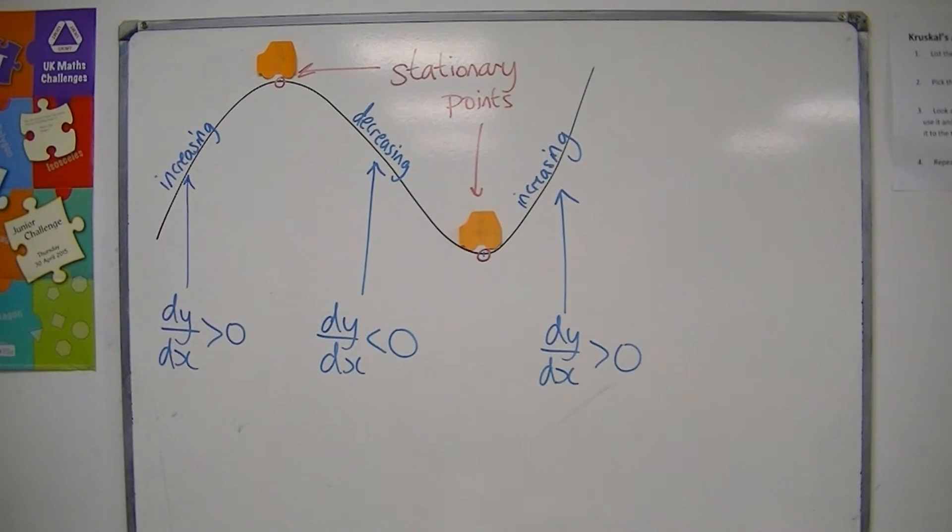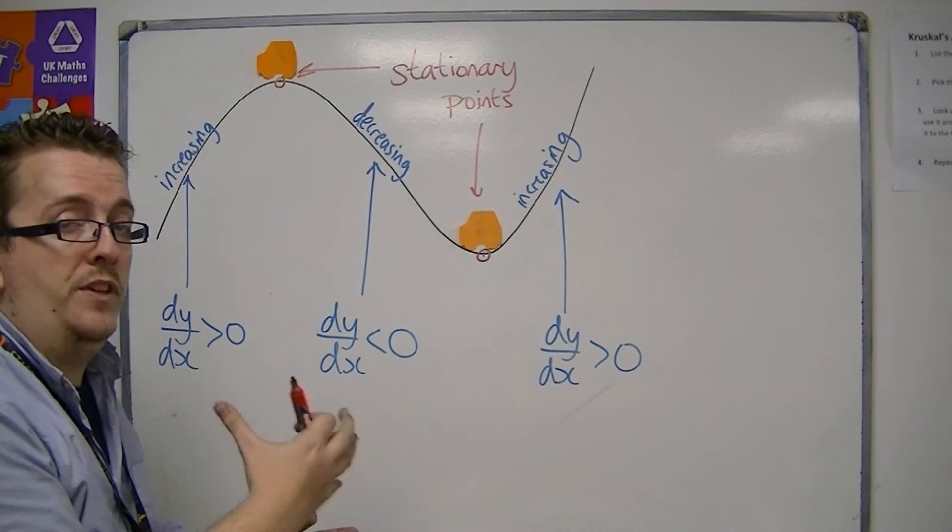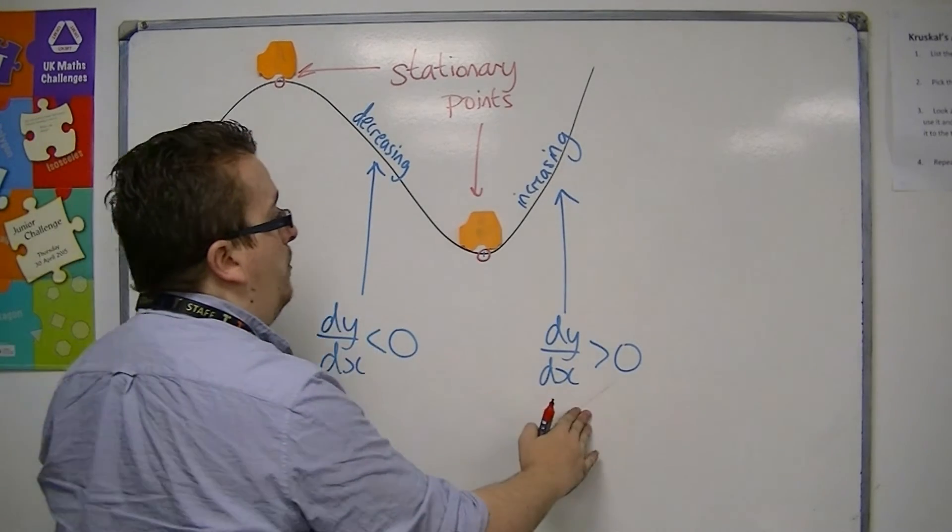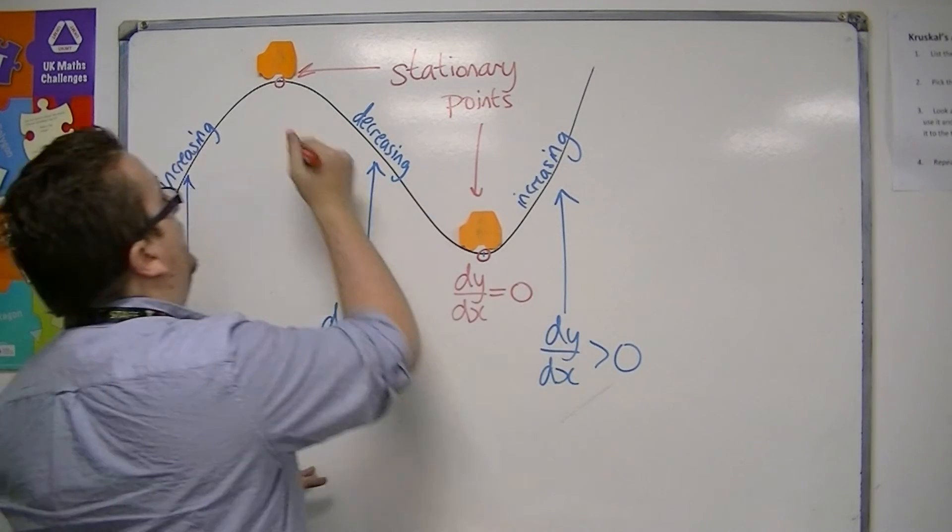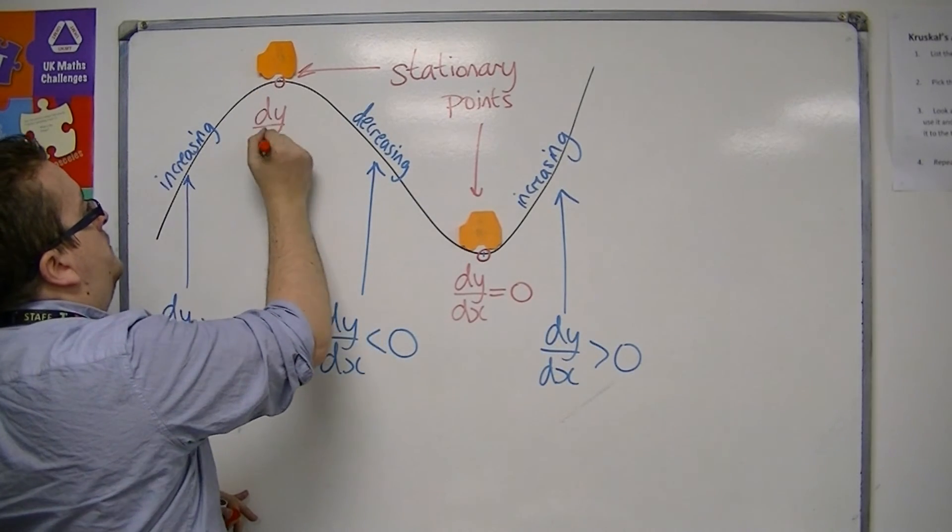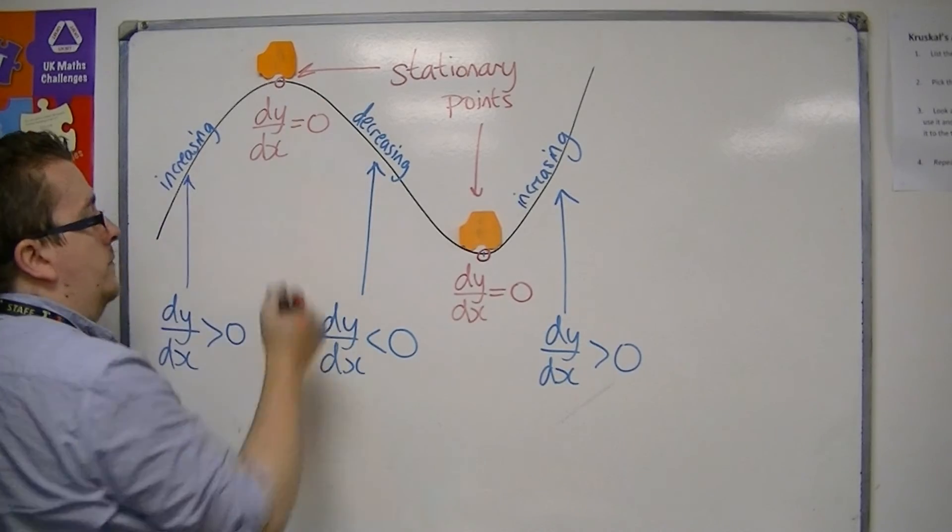And you might be able to guess that because we're going from a positive to a negative value of dy by dx, or a negative to a positive, this is where dy by dx is equal to zero. Okay?